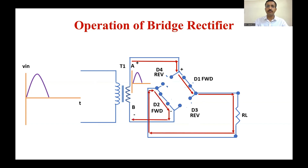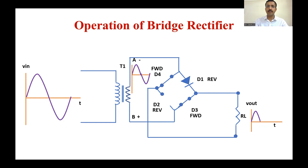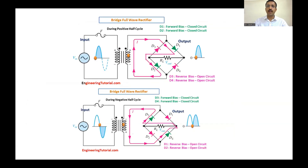In the negative half cycle, D1 and D2 are reverse biased and D3 and D4 go into forward bias. As a result, the waveform is obtained across the load resistance and the flow of current is as shown in the figure. This is the process that takes place in bridge rectification, also illustrated in the animation showing positive and negative half cycles.